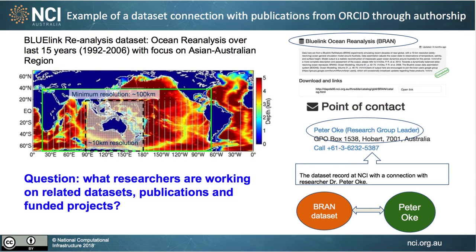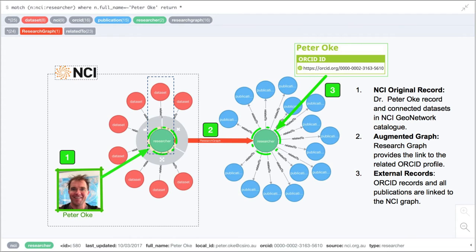We're really looking to say: once we publish that data, how is it used and how is it referenced outside of the community, outside of the centre? Through this ResearchGraph software, we're able to take this local graph information system and connect it together with external information that might be in ORCID systems or in the publication world, linking those two bits of information together and allowing us to mine that.